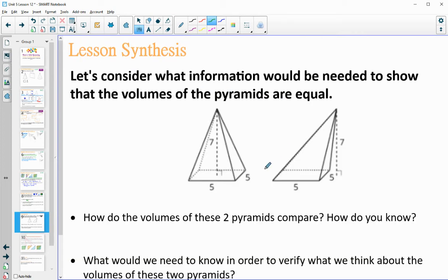So if we take a look at these two pyramids, we know that if they have the same base area - so this base area is 5 times 5 or 25, this base area again is 5 times 5 or 25 - and then they have the same height, 7 and 7, then their volumes are going to be the same.